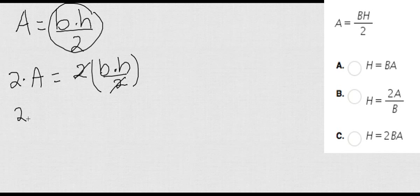And I have 2A equals B times H. Finally, I can go ahead and divide both sides by B because remember I want the H to be by itself, and my final answer is 2A divided by B.